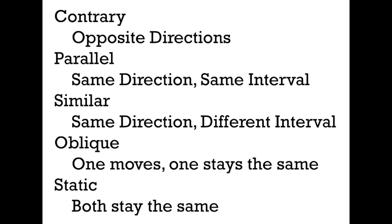Here's a quick summary of our motion types. Contrary motion: when voices move in opposite directions. Parallel motion: when voices move in the same direction by the same interval. Similar motion: when voices move in the same direction by a different interval. Oblique motion: when one voice moves and one stays on the same pitch. And static motion: when both voices stay on the same pitch. We're going to want to know these terms, recognize the different motion types, and use them to connect our chords in skillful ways.